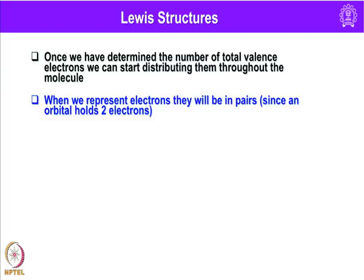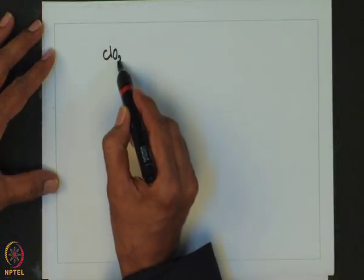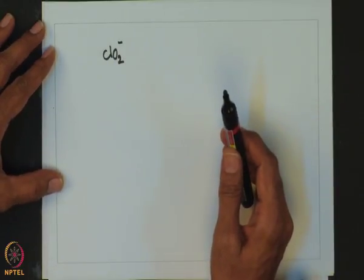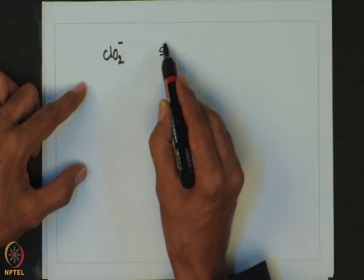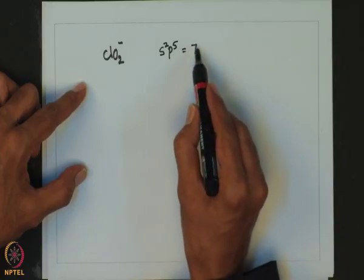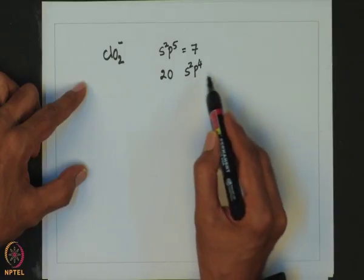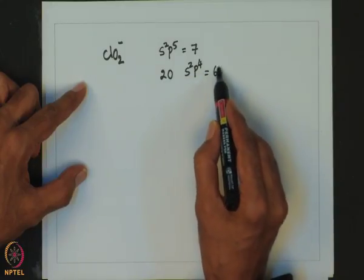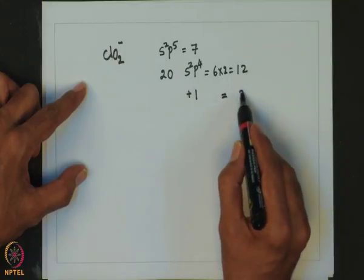Once we have determined the number of total valence electrons, we distribute them throughout the molecule. Electron pairs can be represented with two dots or a solid line. Let us consider a simple anion such as ClO₂⁻. As a first step, we count the valence electrons of all atoms: Cl has s²p⁵ configuration giving 7 electrons, and the 2 oxygen atoms each contribute 6 electrons (s²p⁴), giving 12. Since there is one negative charge, one additional electron is counted, giving a total of 20 electrons.